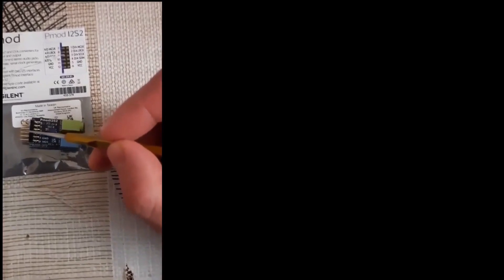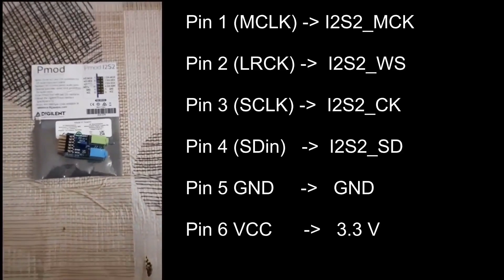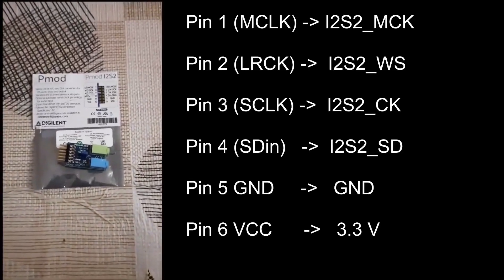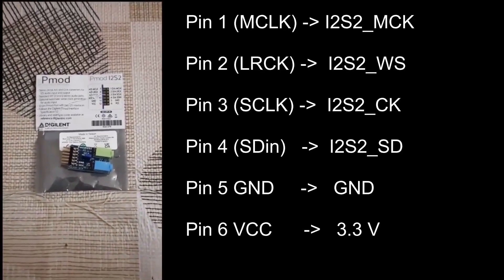Upper pins are for the speaker. Lower pins are for the microphone. Now you can see the connections between the module and the STM32.